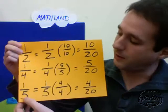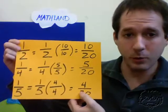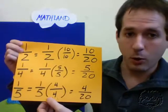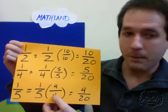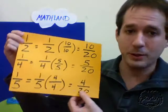Last, 1 fifth. 1 fifth times 4 over 4 equals 4 20ths. We chose 4 over 4 because we wanted 5 times this denominator to equal 20. And 5 times 4 is 20.